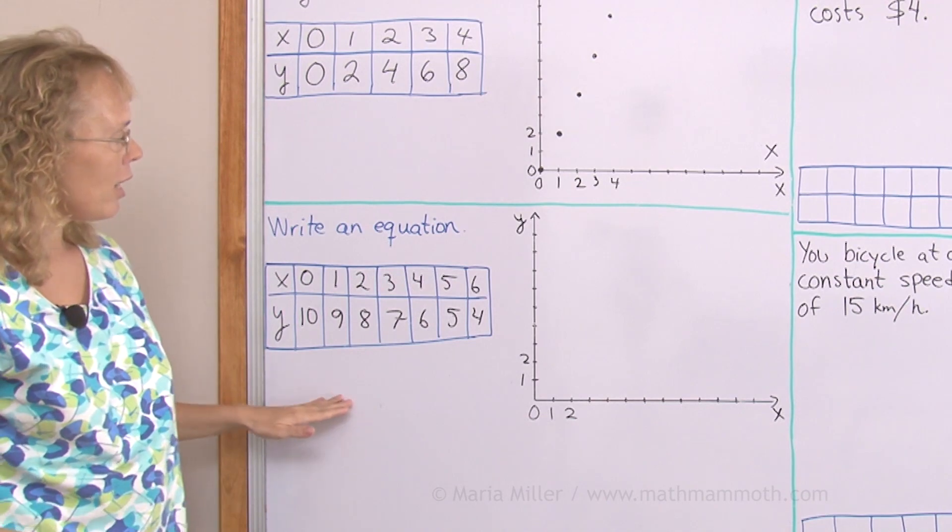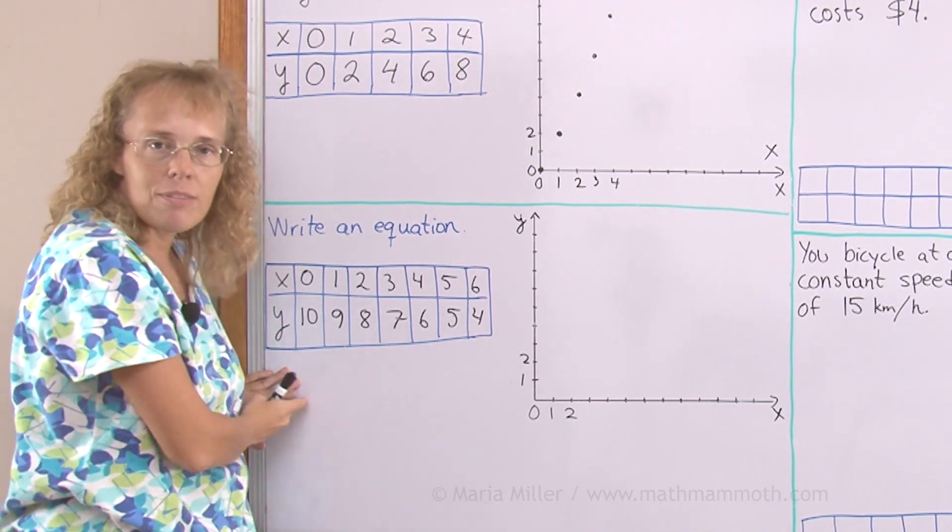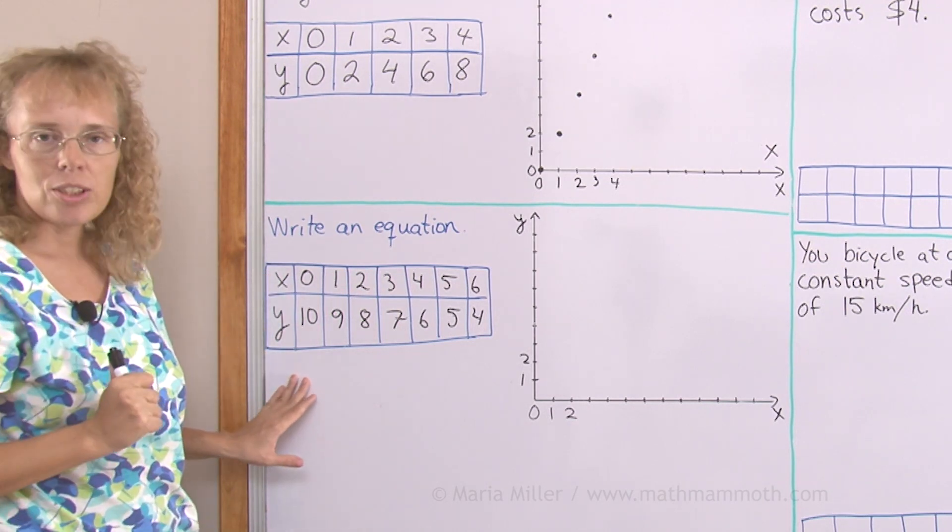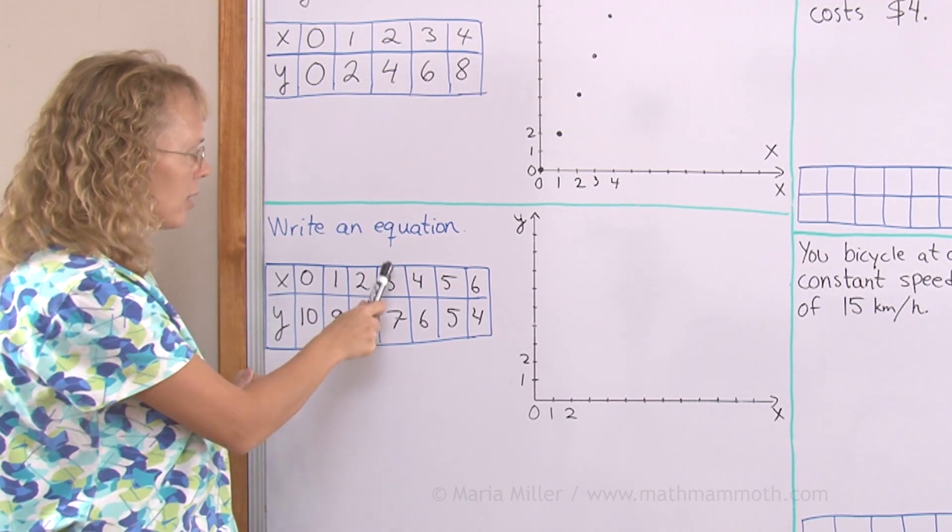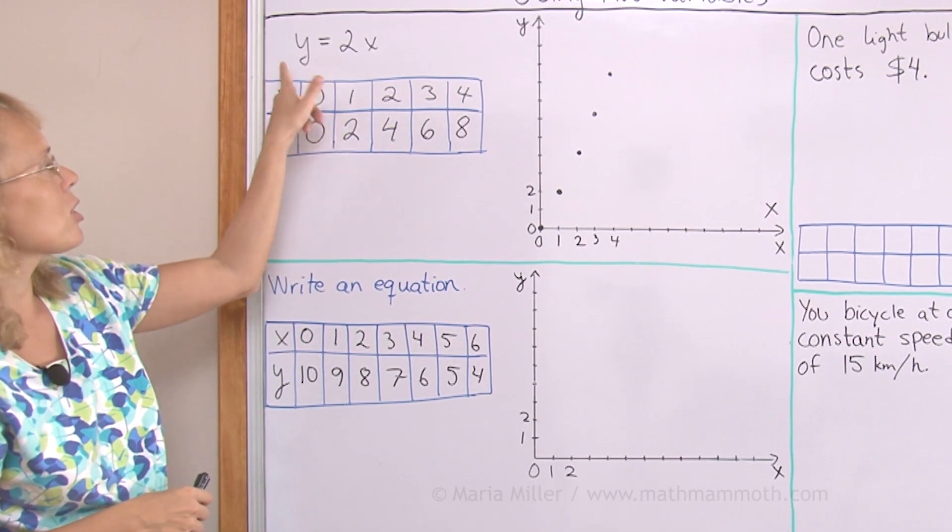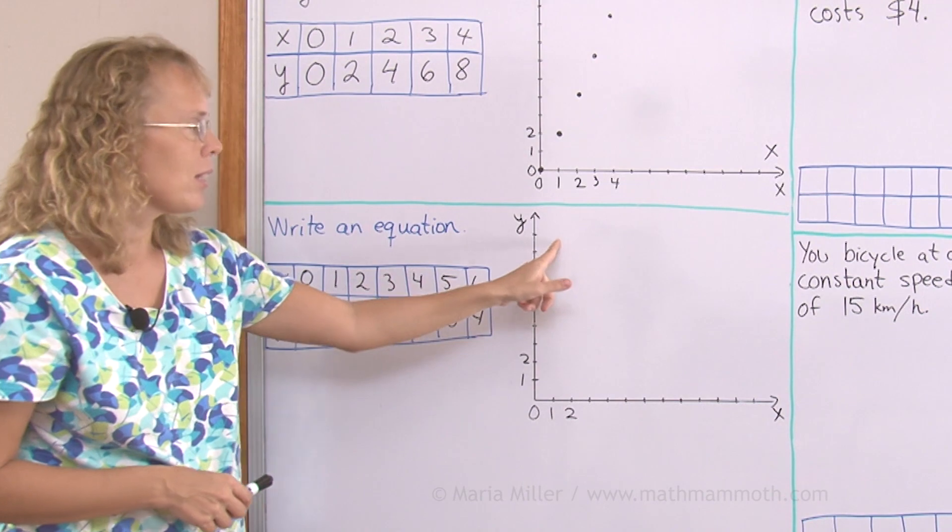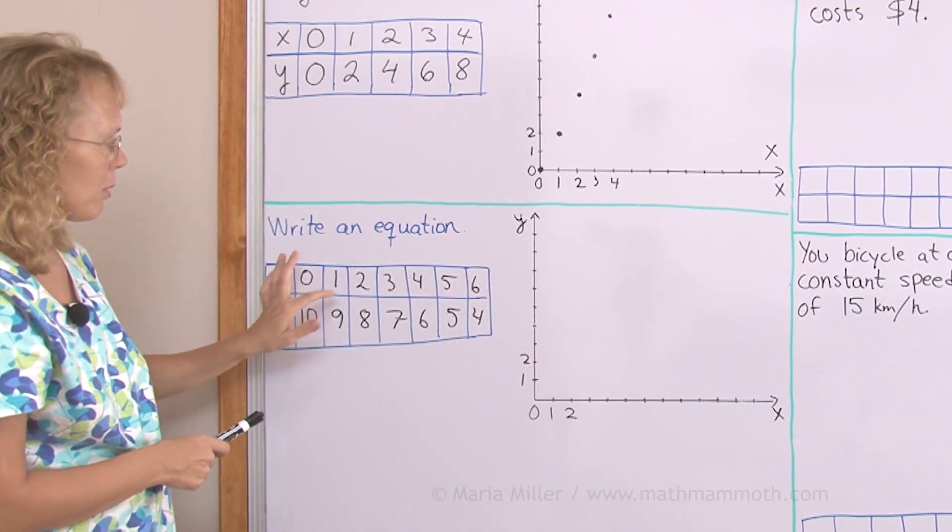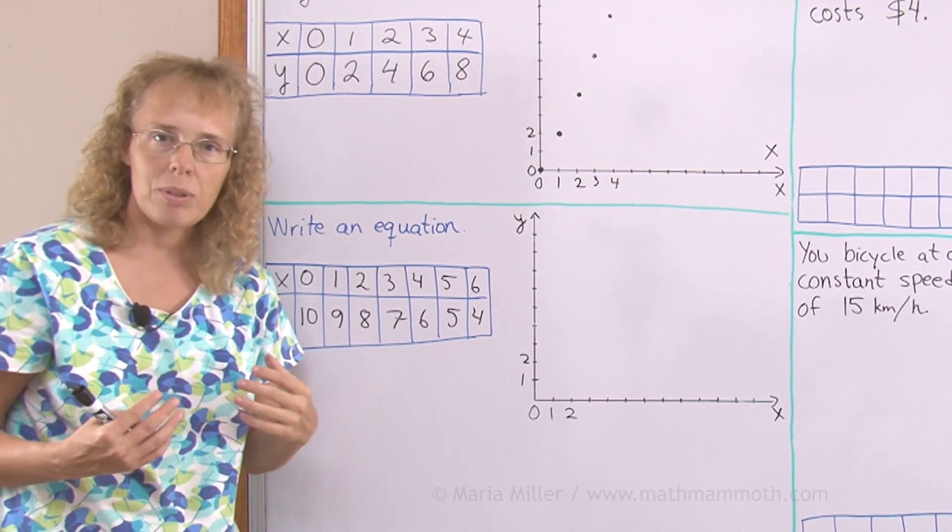Now here we have a little bit different situation. We are given this table of values for x and y and we need to write an equation that is the relationship between x and y. What relationship is there between these numbers? We just have to figure it out here and write it as an equation. And then we will plot the ordered pairs here. 0 and 10, 1 and 9, 2 and 8, 3 and 7. Can you see what relationship there is?